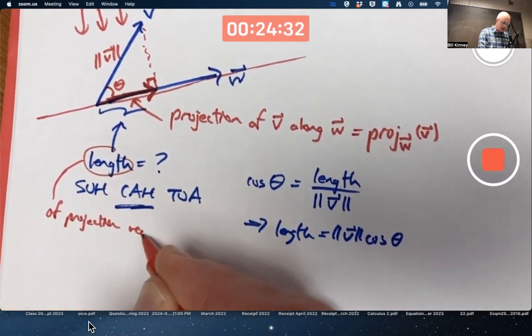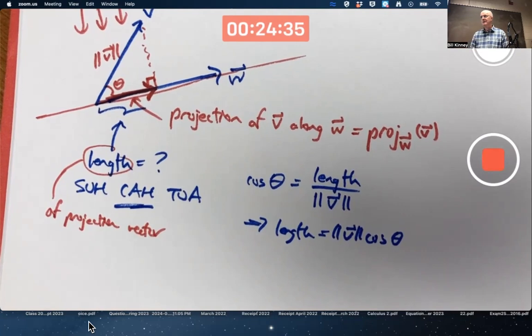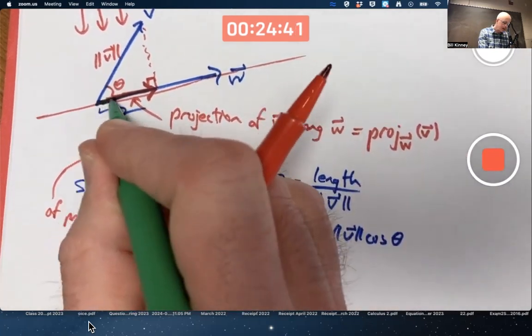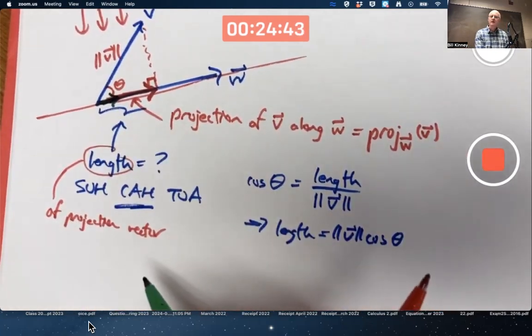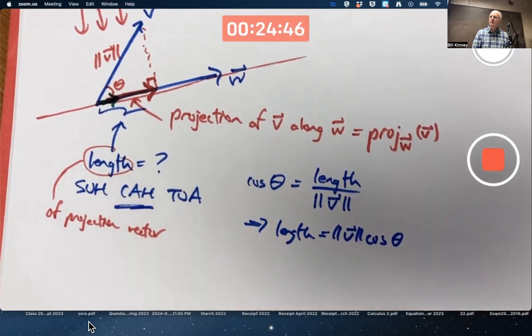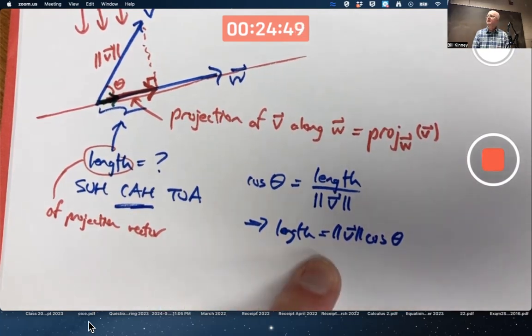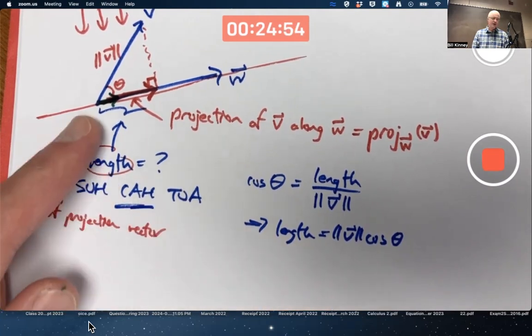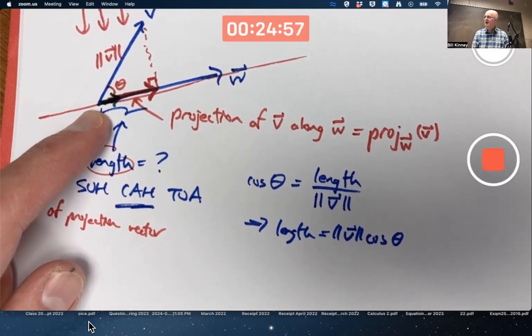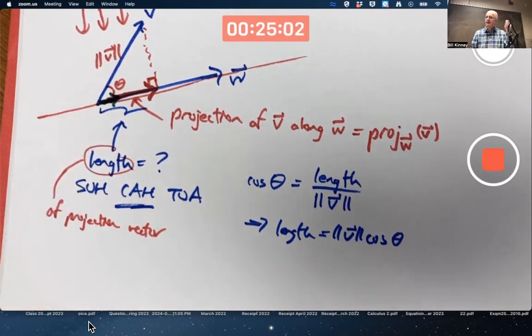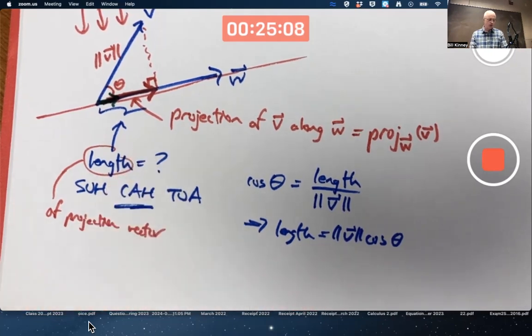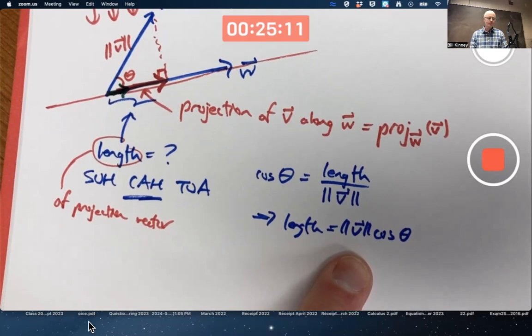So if I could find a unit vector, a vector of length one in the same direction as W, all I would have to do to find the projection vector is rescale it by this length. If I could find a unit vector pointing in the same direction as W, to find the projection vector all I have to do is scale it up by the length of the projection vector, which I know.